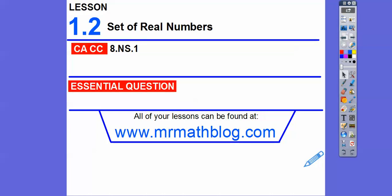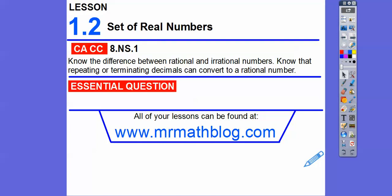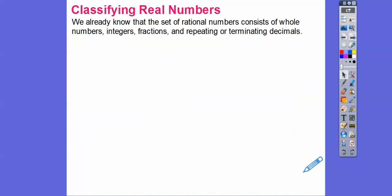Hey everybody. This is a pretty fast lesson on the set of real numbers. So we're going to just talk about different numbers here. There's our common course strand — it's been the same common course strand for the last couple of lessons. So how can we describe the relationship between the set of real numbers?